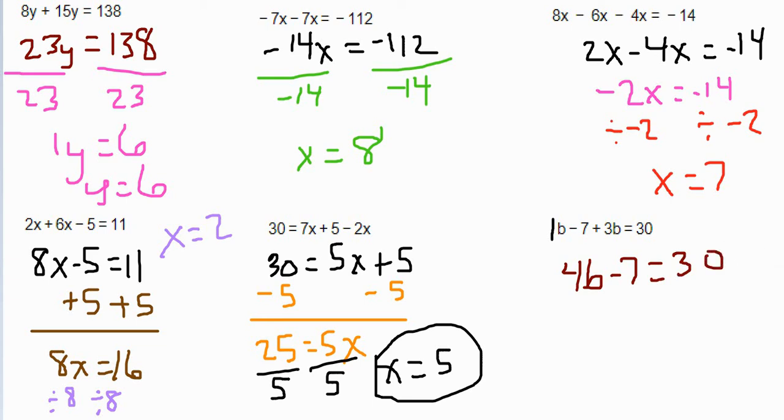This one we're going to end up with a fraction for the answer. I already can tell. Get rid of the stuff that's on the same side of the letter by not touching it. That's the negative 7. So the opposite of negative 7 is a positive 7. Add 7 to both sides. So that gives us 4b equals 37.